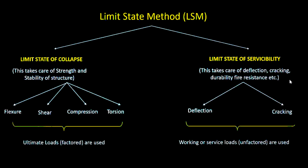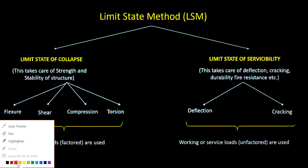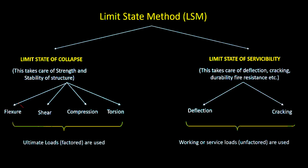We have finished discussing how to resist flexure. Now we are going to discuss the second limit state of collapse. In the limit state method, there are two categories: limit state of collapse and limit state of serviceability. Within limit state of collapse we have flexure, shear, compression, and torsion. Since flexure is done, we now need to discuss shear — specifically how reinforced concrete resists shear.